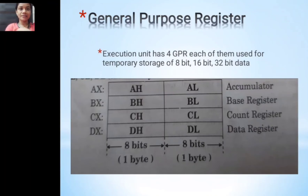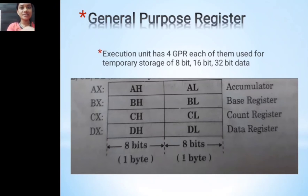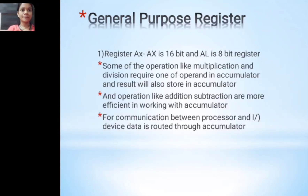AX, BX, CX, and DX are 16-bit registers. AH and AL are 8-bit parts of AX. If your data is 16-bit, we use AX; if 8-bit, we use AH and AL. Similarly, BH/BL, CH/CL are 8-bit sub-registers. If data is 16-bit, we use AX, BX, CX, and DX.